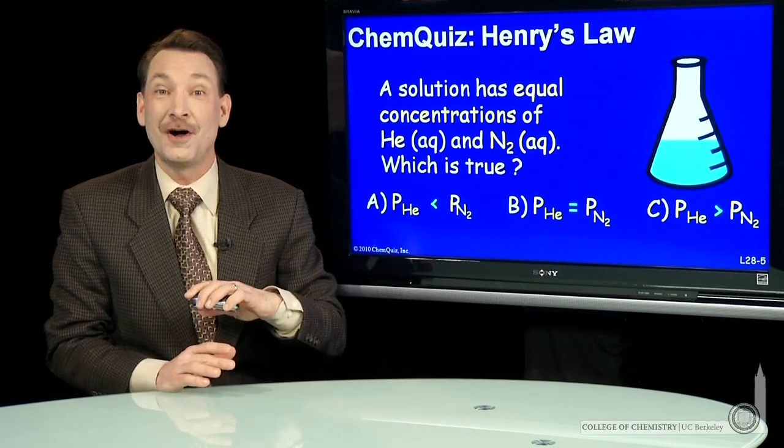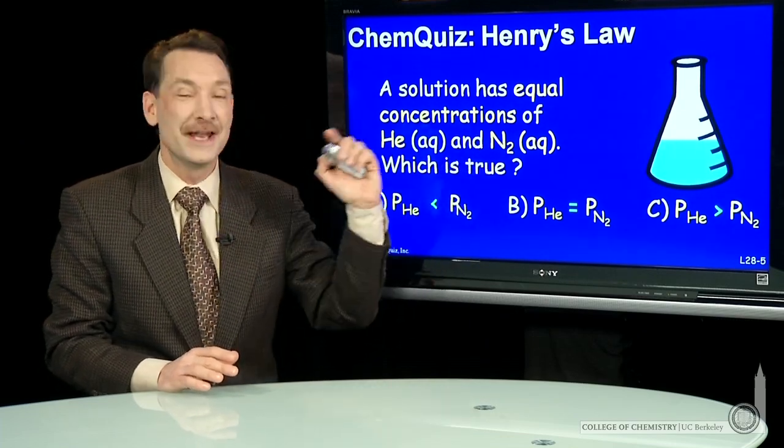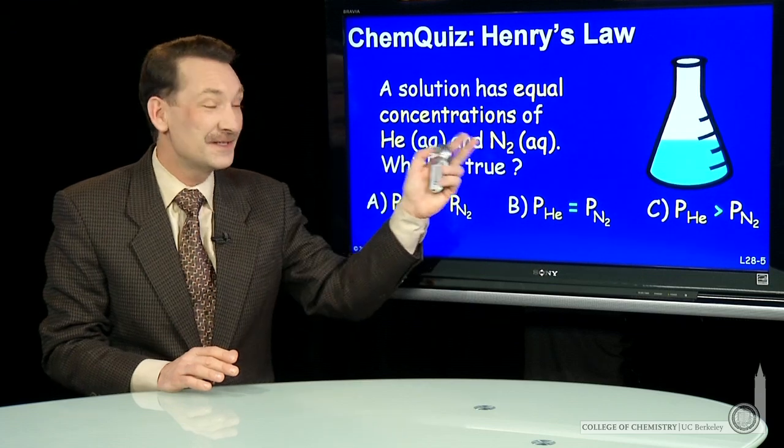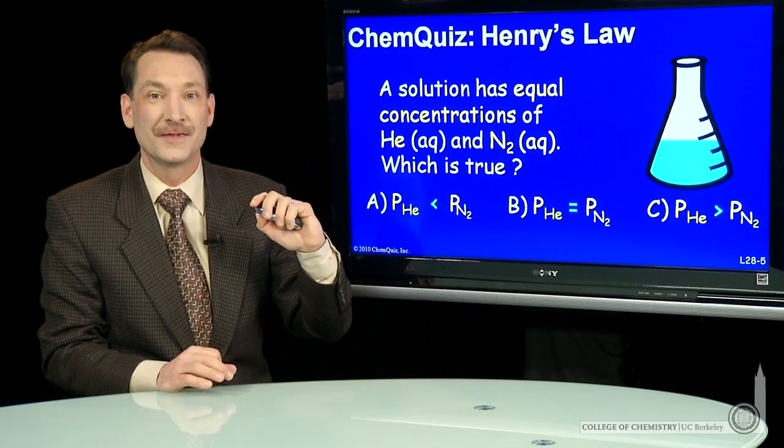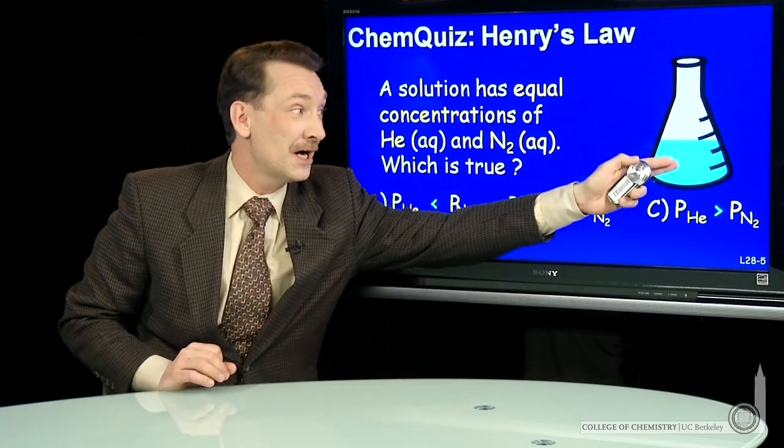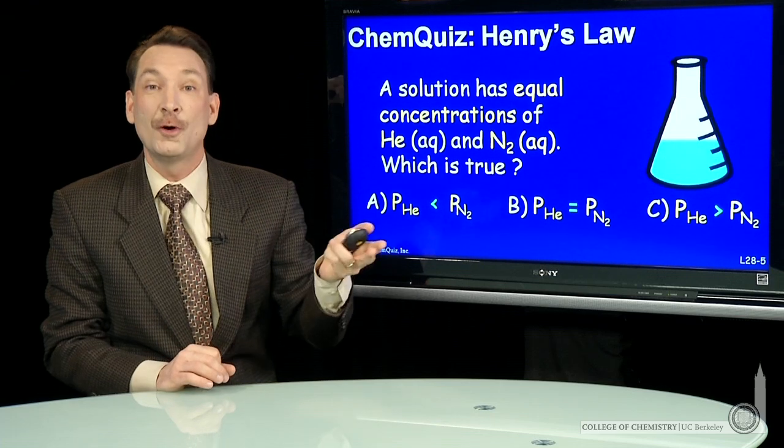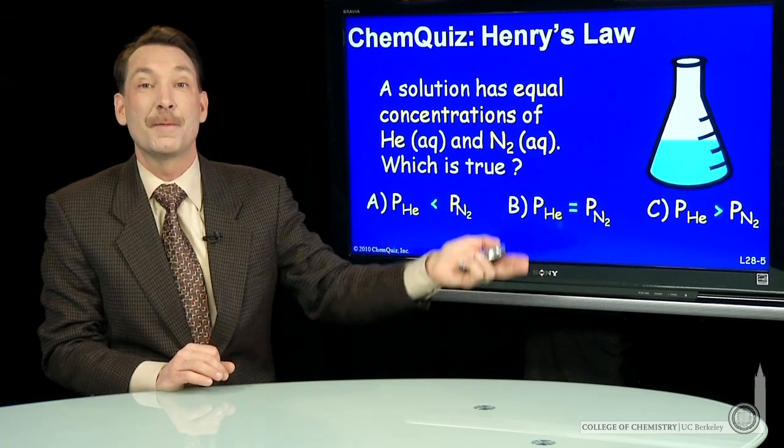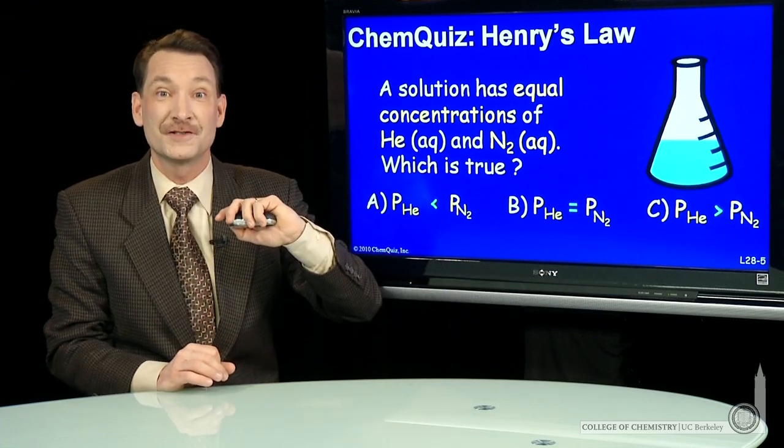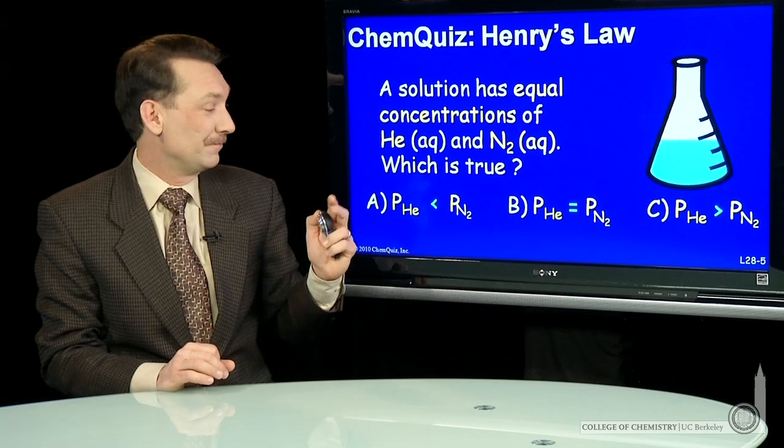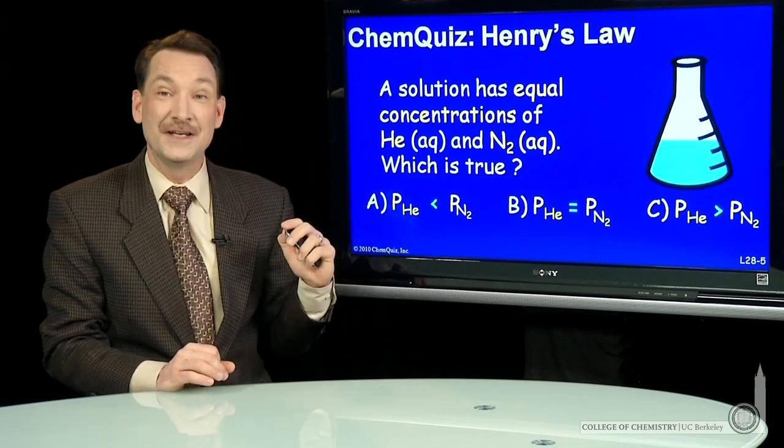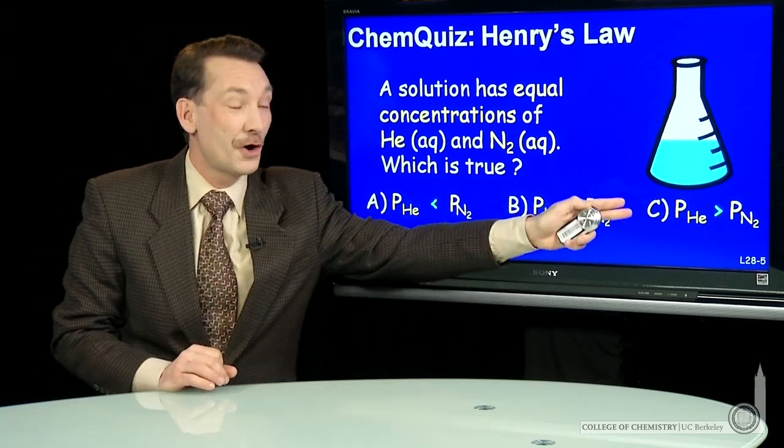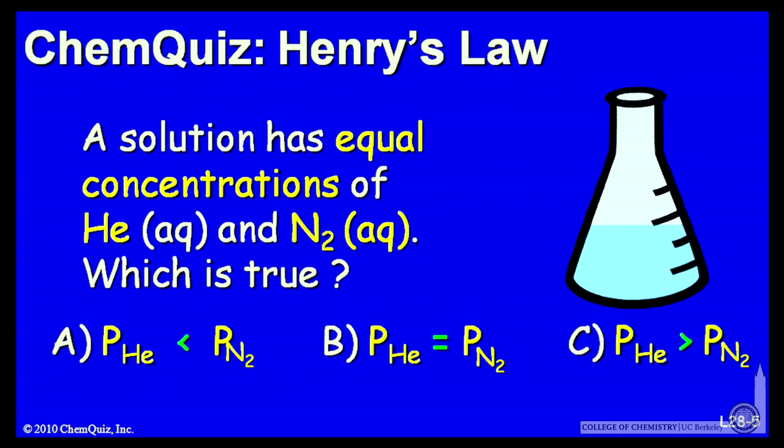Let's look at two gases dissolved in a liquid: helium and nitrogen, aqueous solution for both of them. Let's say they're both at equal concentrations in the solution. What does that mean about the partial pressure above the solution when that's at equilibrium? Is the partial pressure of helium smaller, equal to, or greater than the nitrogen partial pressure? Think about that for a minute and make a selection.